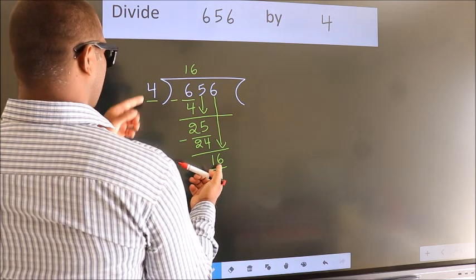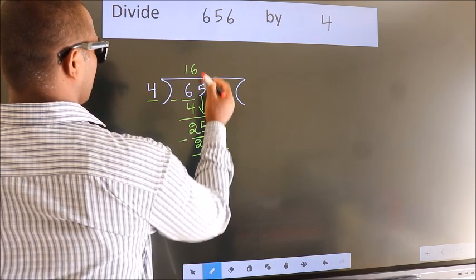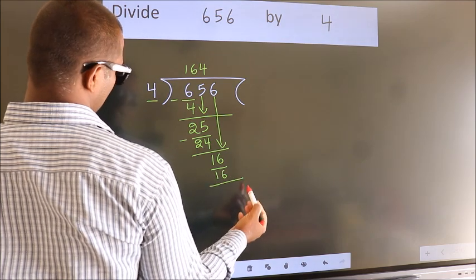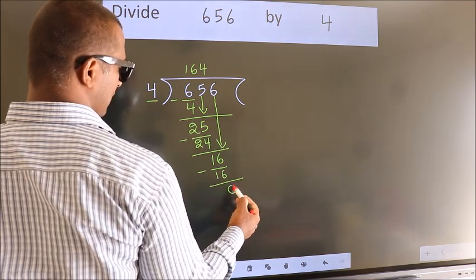When do we get 16? In the 4 table. 4 fours, 16. Now we subtract. We get 0.